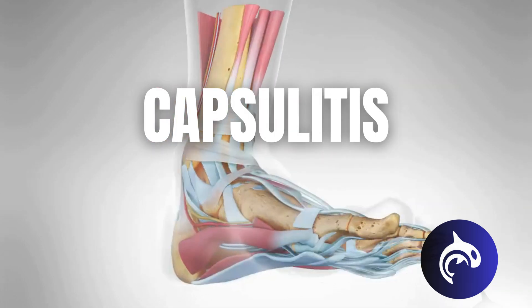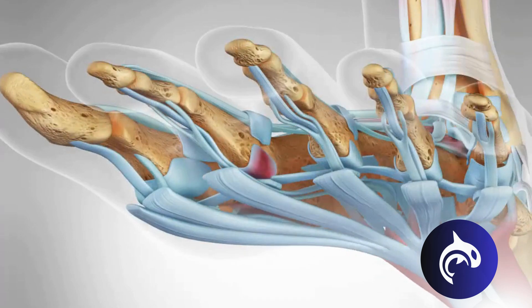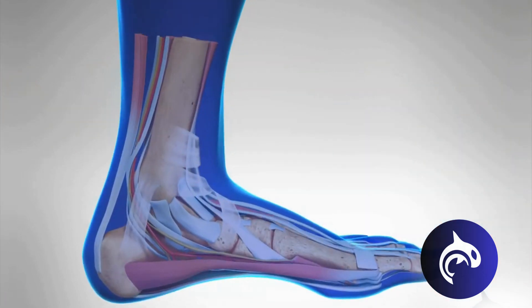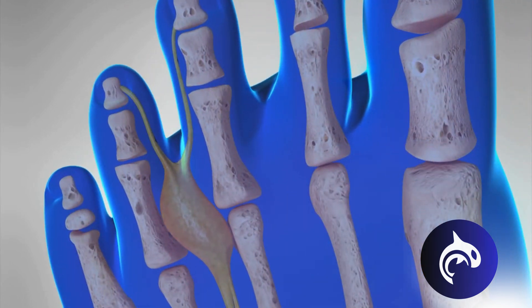Capsulitis is a condition caused by inflammation of the joint capsule at the ball of the foot, most often at the base of the second toe. It's often confused with Morton's neuroma, which can affect the same general area, but is caused by compressed nerves.